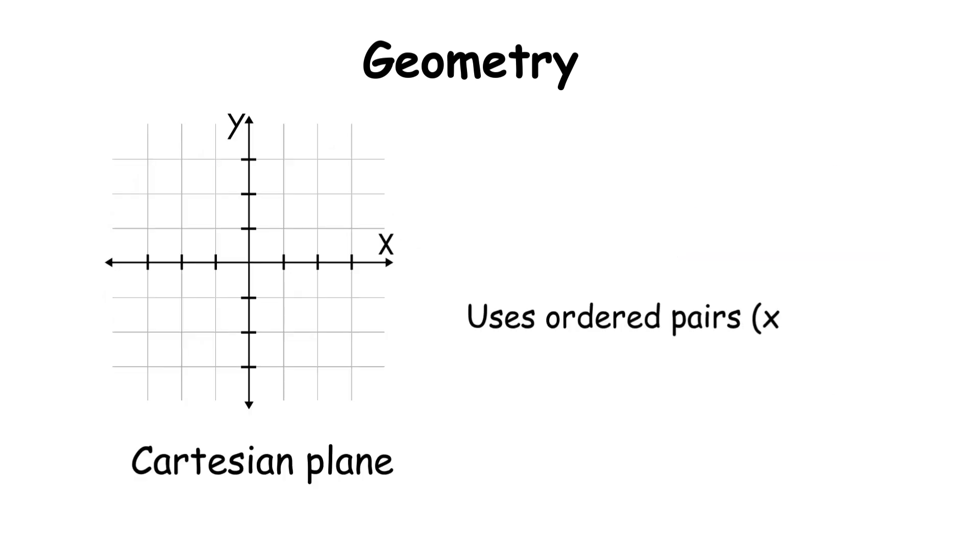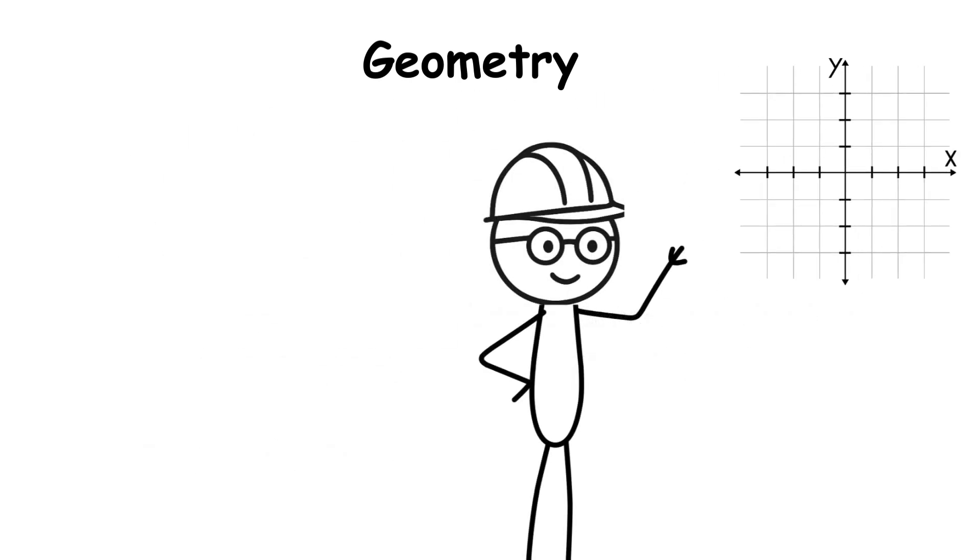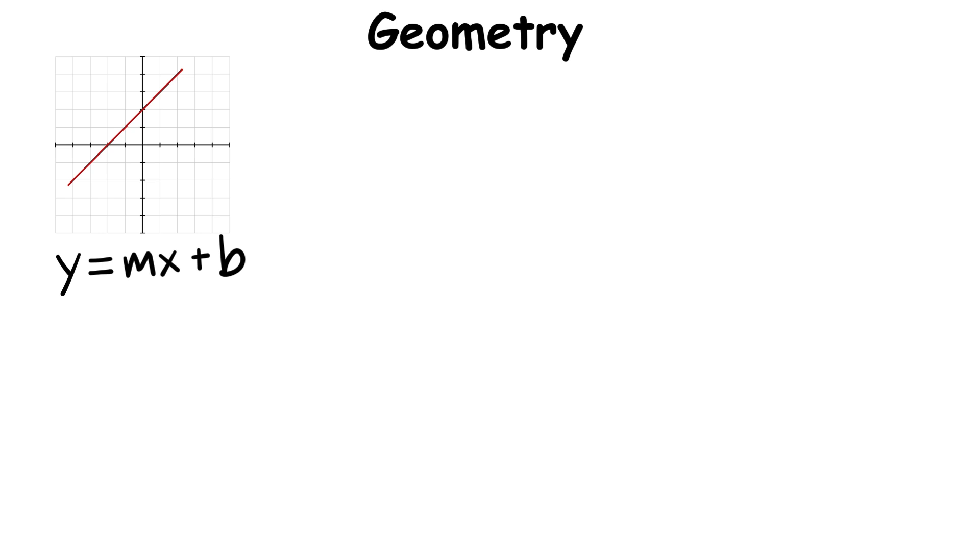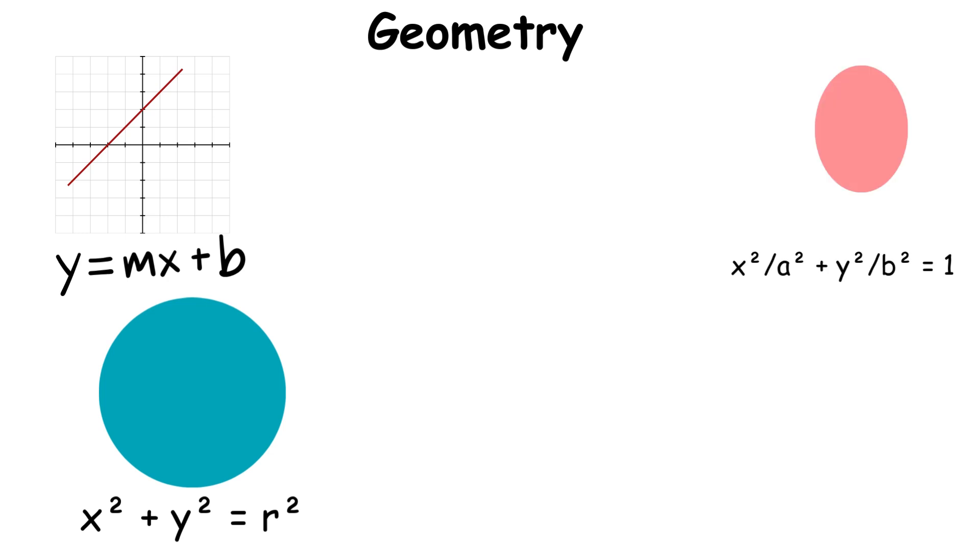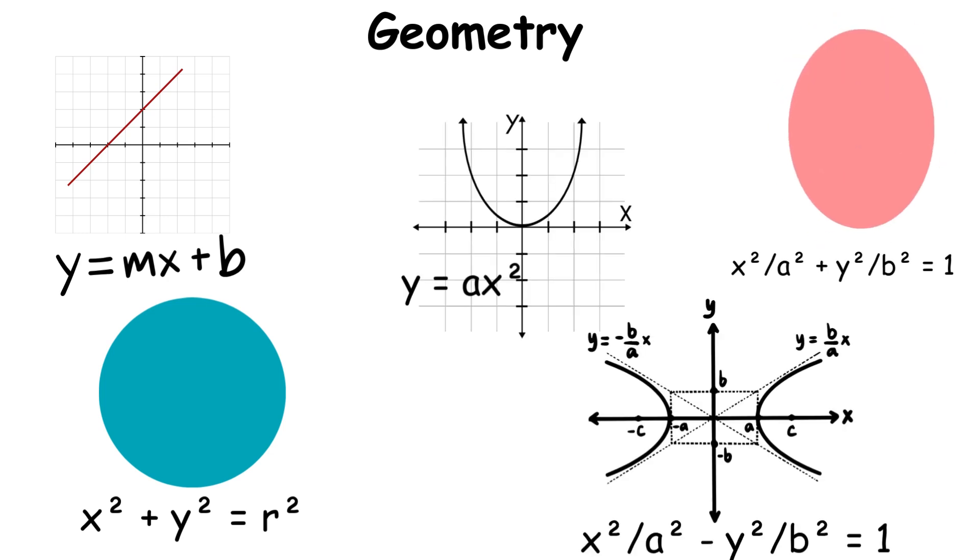The Cartesian plane uses ordered pairs to represent points, and we can describe geometric objects using equations. Lines become y equals mx plus b, and those conic sections make their comeback: circles as, ellipses as, parabolas as, and hyperbolas as.